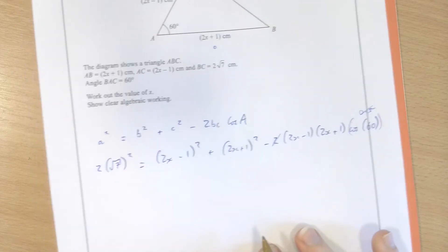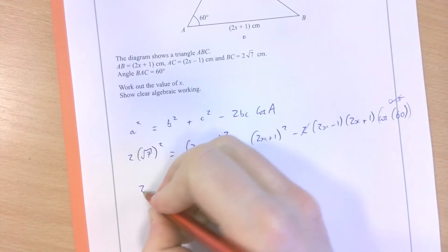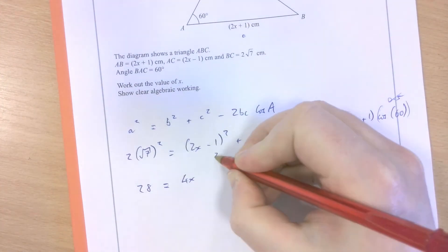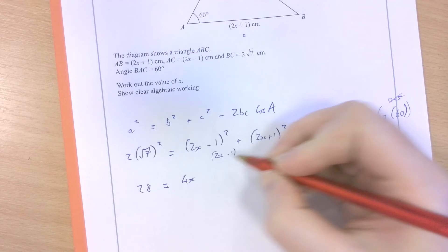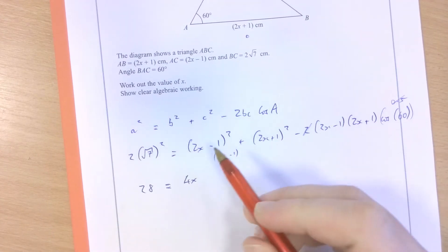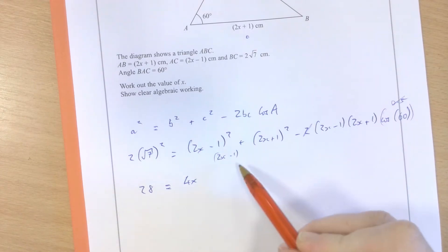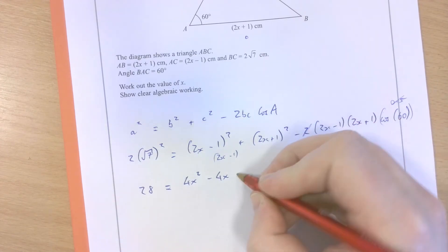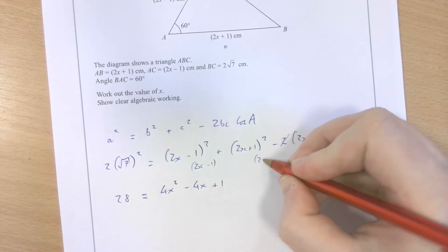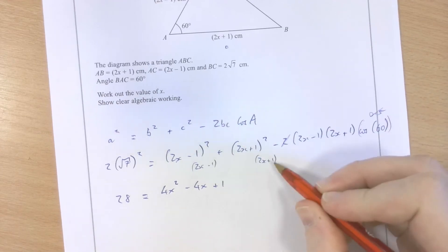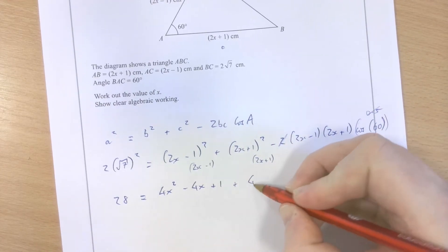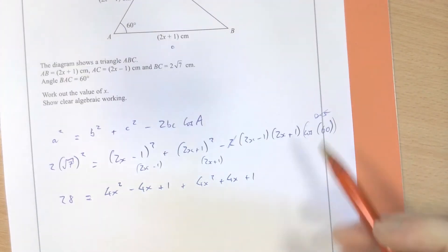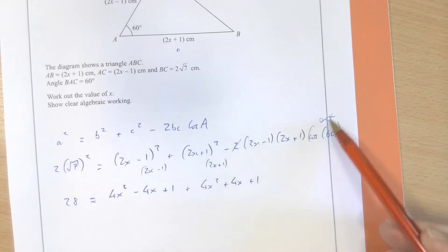If I square 2 root 7, I get 28. 2x minus 1 squared is 4x squared. Sometimes I like putting in the second bracket there just so I can physically go through the FOIL expansion. 2x times 2x is 4x squared, that's minus 2, that's minus 2, 4x squared minus 4x plus 1. And then again, similarly over here, 2x plus 1 squared is 2x plus 1 times 2x plus 1. That's 4x squared plus 4x plus 1. We've already discussed how cos 60 is a half, so effectively cancels out that 2, halving it to just 1.